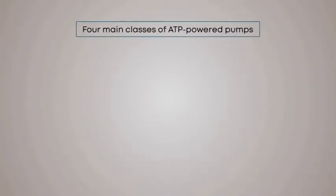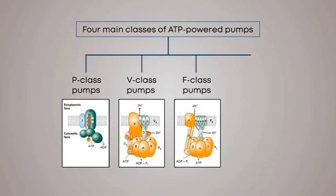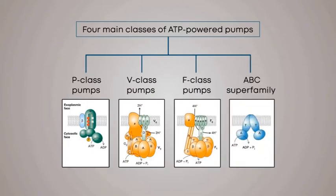The energy is used to move ions or other molecules uphill against an electrochemical gradient. There are four main classes of ATP-powered pumps: P-class, V-class, F-class pumps, and the ABC superfamily of transporters. The members of three classes — P, V, and F — and also some members of the ABC superfamily transport only ions. Most members of the fourth class, the ABC superfamily, transport small molecules such as amino acids, sugars, peptides, lipids, and other small molecules including many types of drugs.